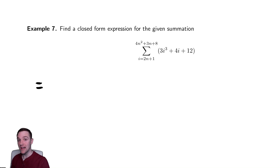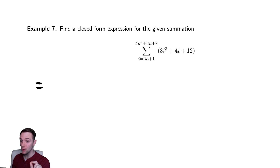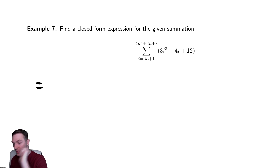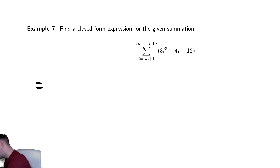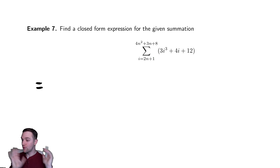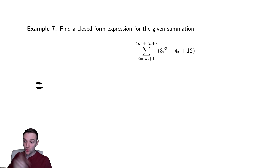Step one is identifying that this summation does not start at i equals 1 or i equals 0. It starts at i equals 2n plus 1, which is not a convenient value because our formulas all presuppose that i starts at 1 or 0. So we're going to try to rewrite this as two different summations that both start at 1.